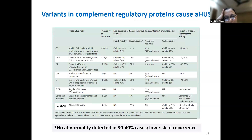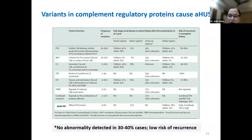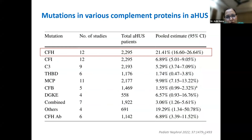Registry data from France, Italy, the US, and the global registry show that CFH mutations are the leading genetic cause of atypical HUS, accounting for about 40% of childhood and adult cases, followed by membrane cofactor protein at approximately 10%, with C3, CFB, and CFI constituting additional cases. Anti-CFH antibodies account for about 7% in pooled meta-analysis data. Notably, 30–40% of cases have no identifiable abnormality.